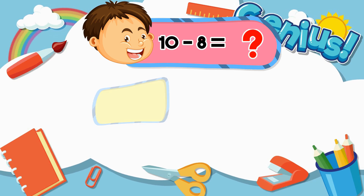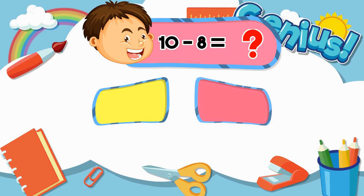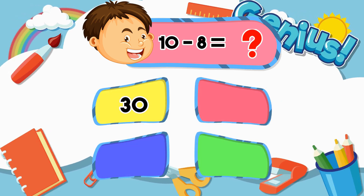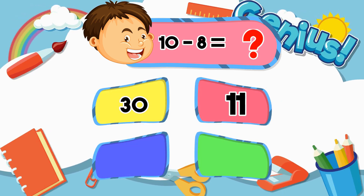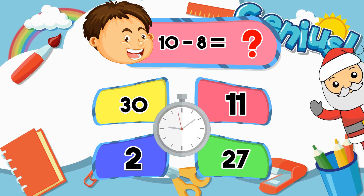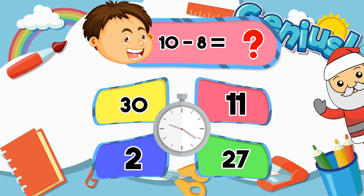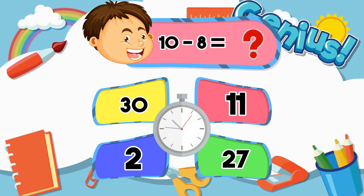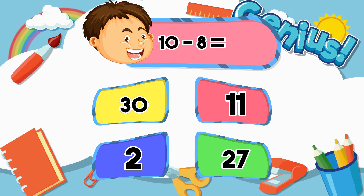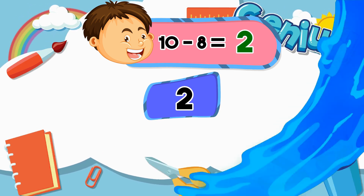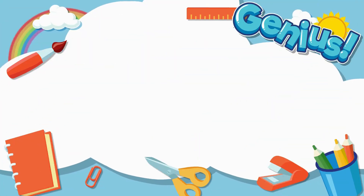What is ten minus eight? Thirty, eleven, two, twenty-seven. Two.